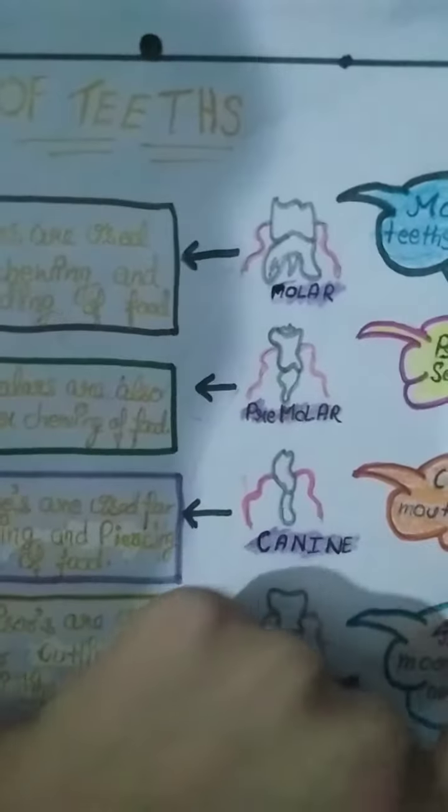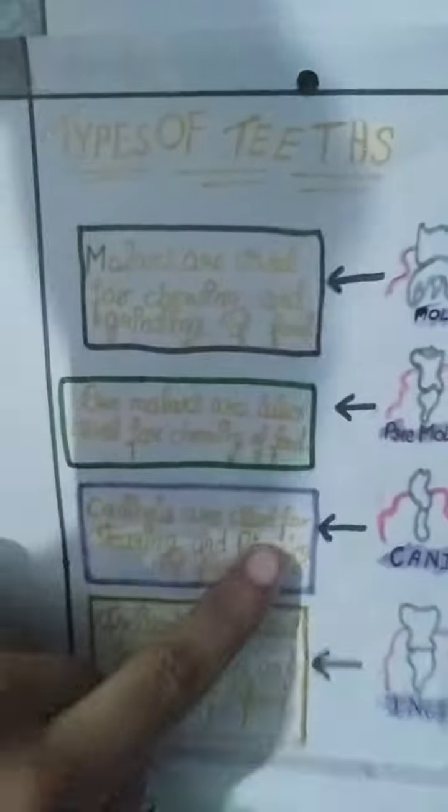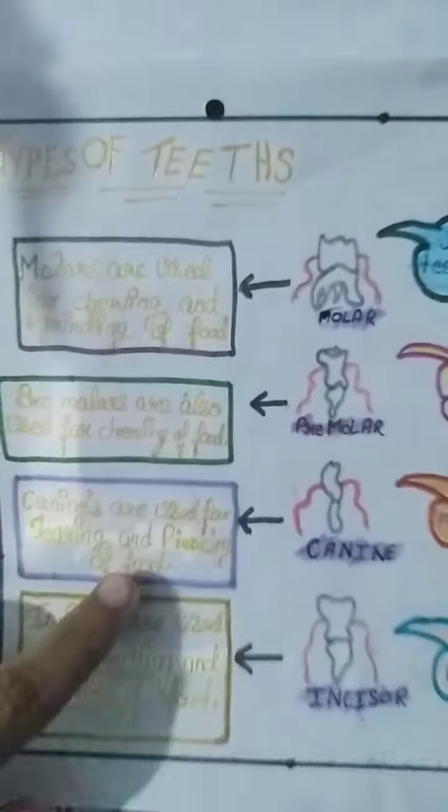Canines are second in the mouth. They are two in number. Canines are used for tearing and piercing of food.